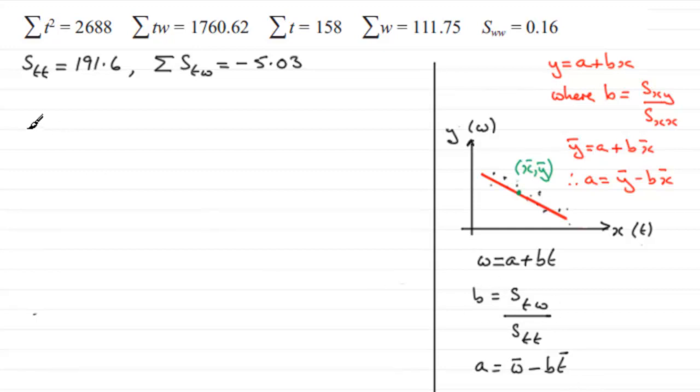So we need to get b first of all. So to get b, we know that it's stw then, all divided by stt. And we've got these values up here that we worked out earlier. So stw is minus 5.03, and that's divided then by stt, 191.6. And if you work that out, you end up with minus 0.02625 and so on. This b value represents the gradient, and you can see it's negative. It's what we would expect for something like this.